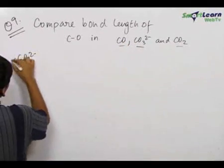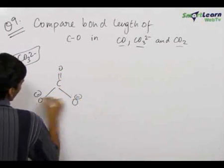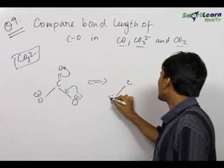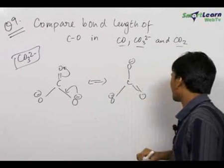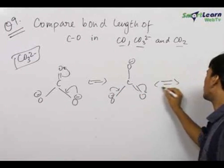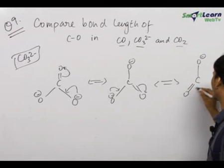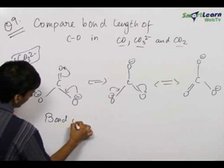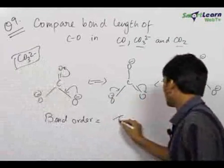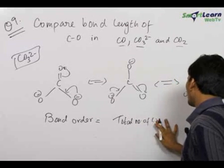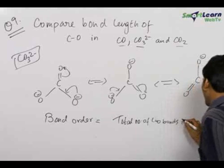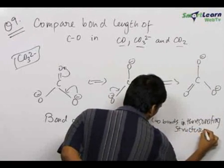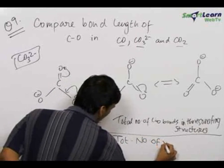So first let us take the case of CO₃²⁻. While drawing the structure of CO₃²⁻, we get the structure like this. Now we know that this molecule resonates. Therefore, on drawing its resonating structures we get three resonating structures possible for this molecule. The formula for bond order is equal to the total number of carbon-oxygen bonds in the resonating structures upon the total number of resonating structures.